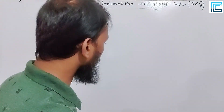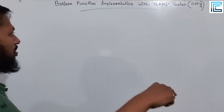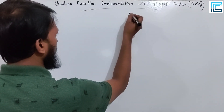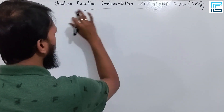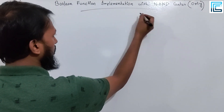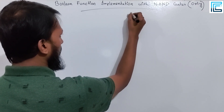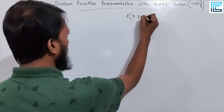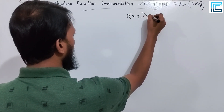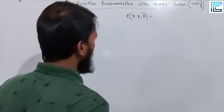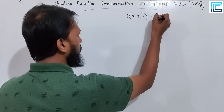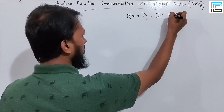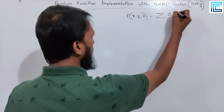To repeat — how do we do this? In this case, using the sum of product form, the function f of x, y, z is expressed as the sum of minterms from 0 to 6.